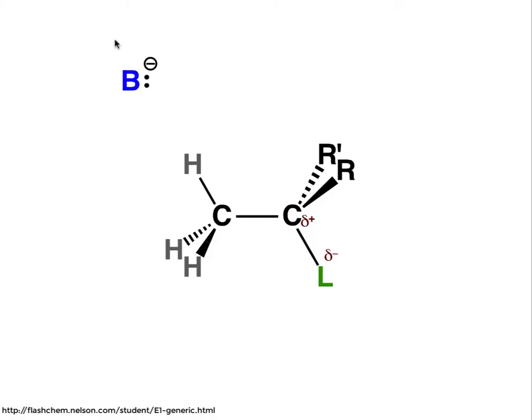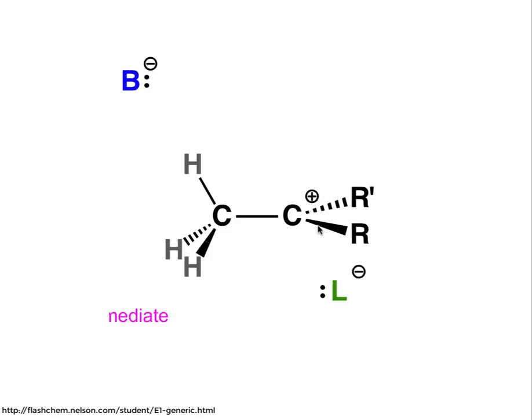We can also watch that as an animation. In the structure shown below, the leaving group first leaves. Notice a rearrangement of the geometry of that central carbon—there's now a trigonal planar carbocation intermediate.